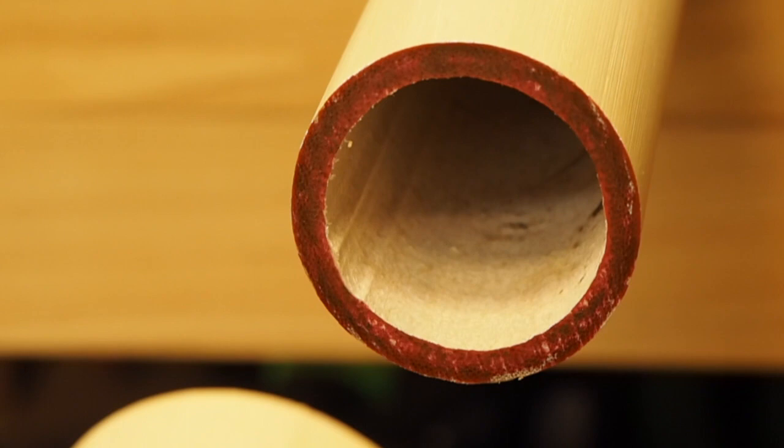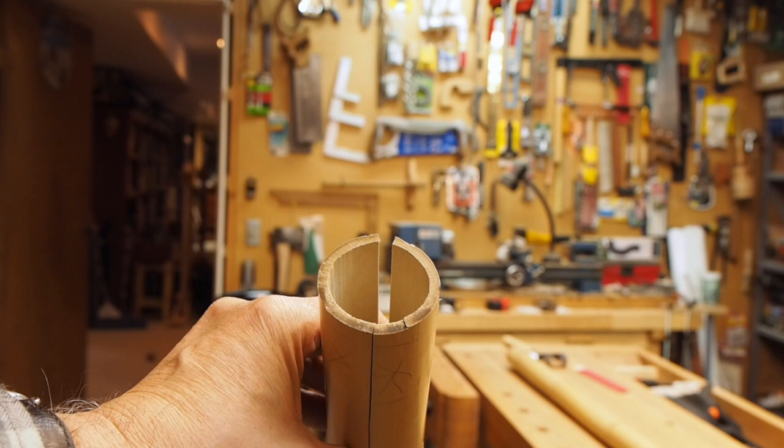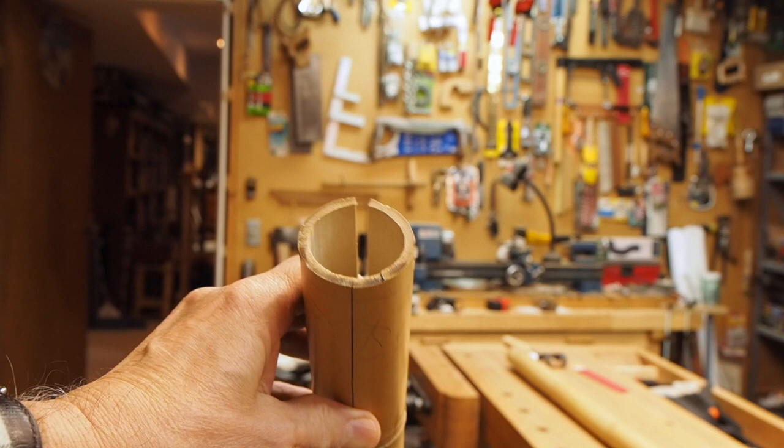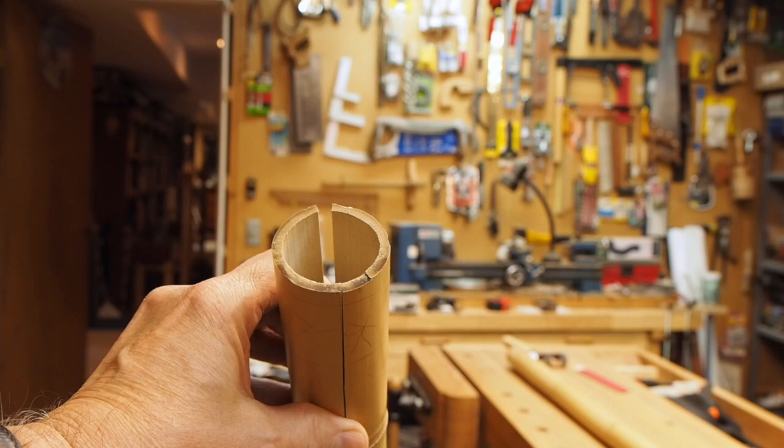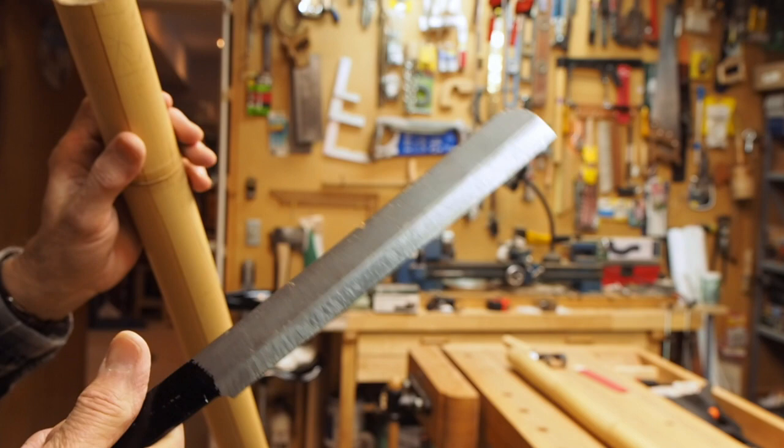We are now going to split the column into the strips that we will need to make our rod. You will notice that as the bamboo dries, it will naturally split in several places. I will use those natural splits to begin the splitting of my column. To split the column, I will use a fro. However, any thick knife blade that's long enough to reach through the column will be sufficient for splitting the column.